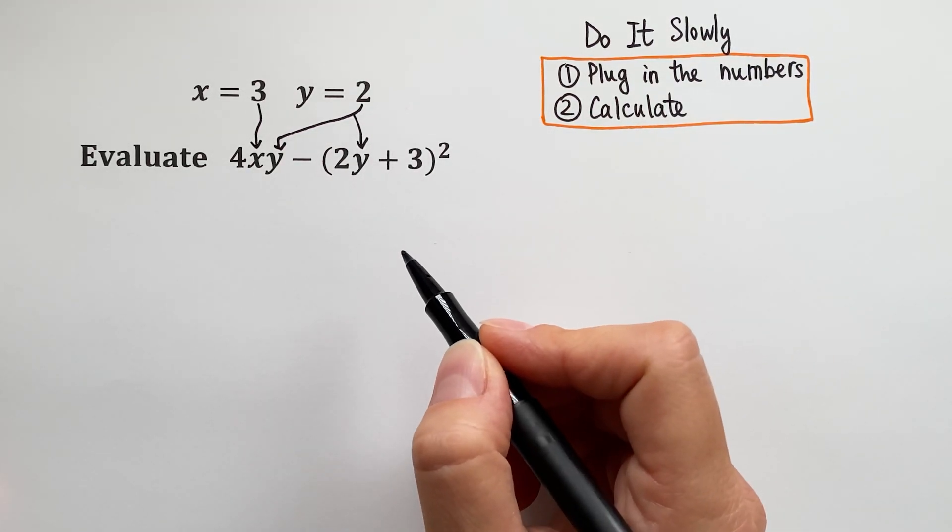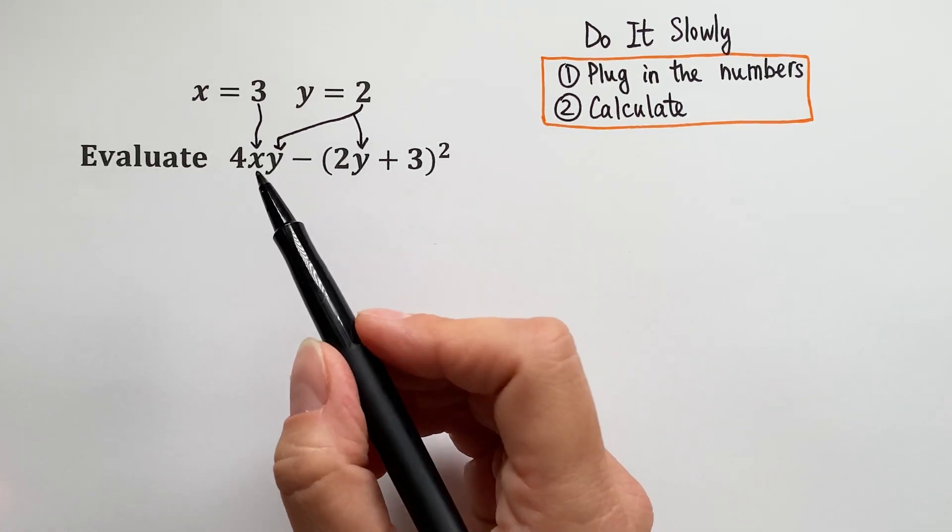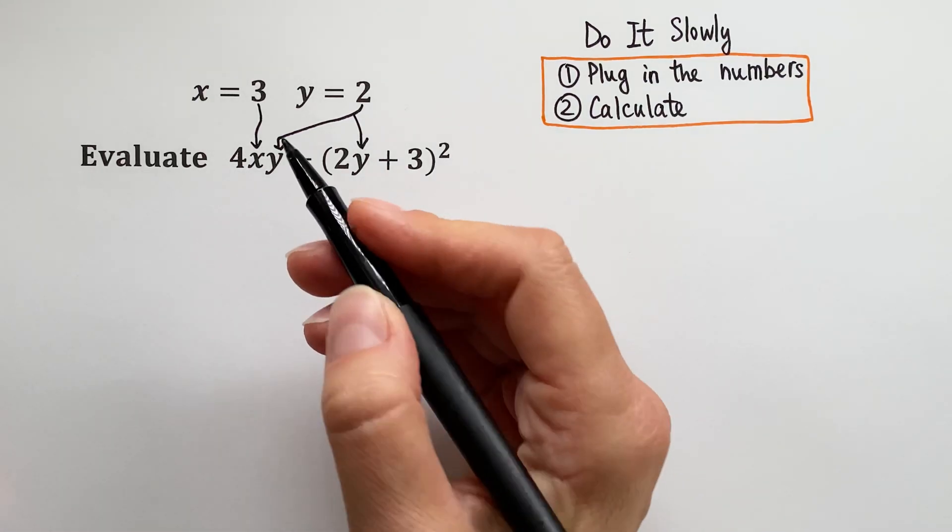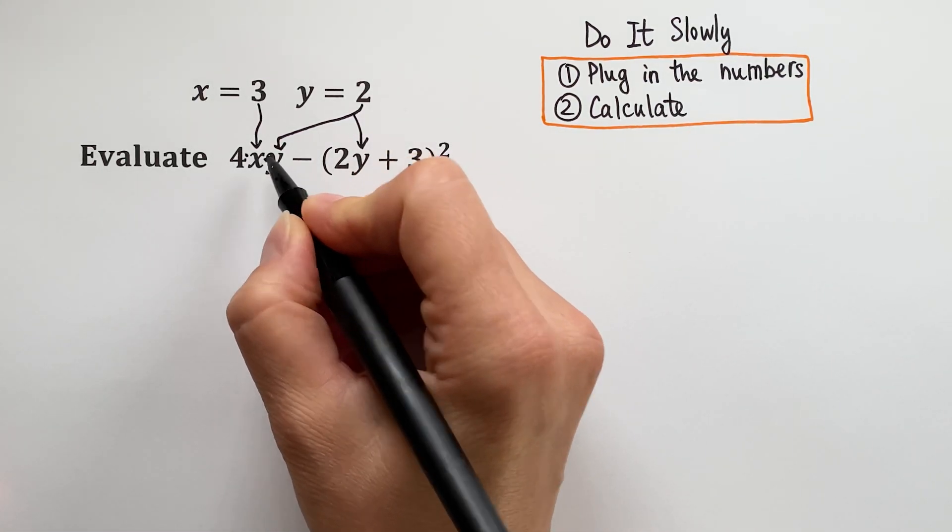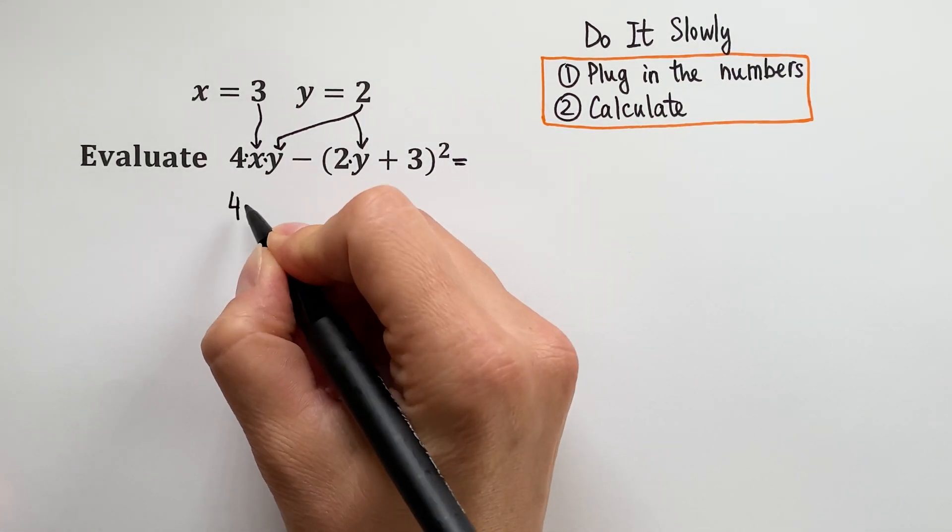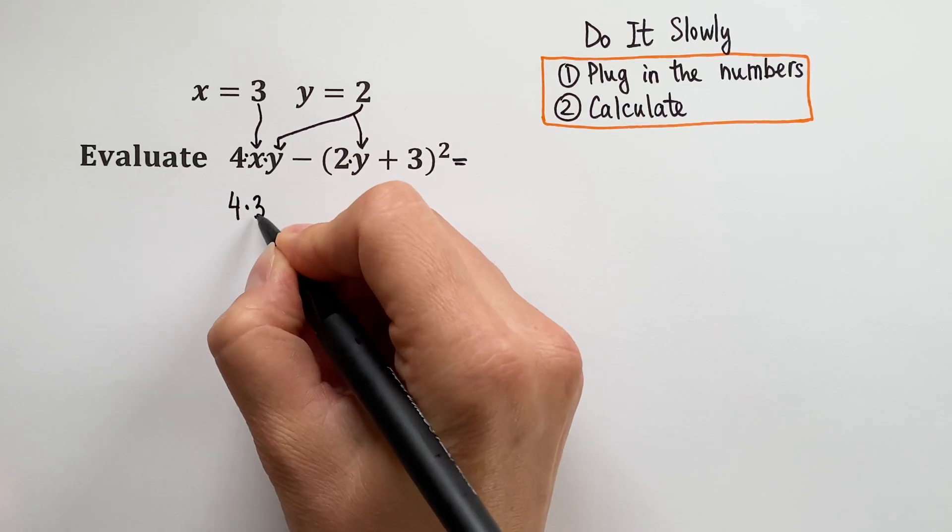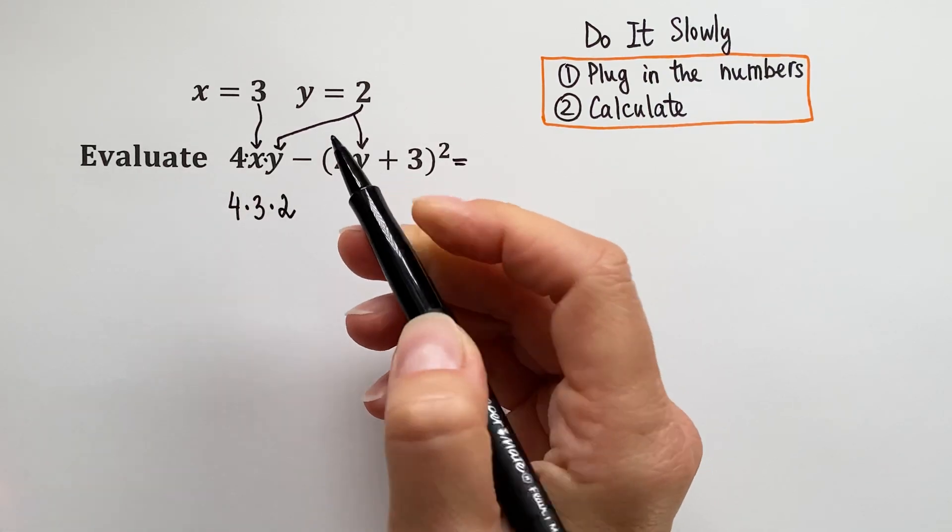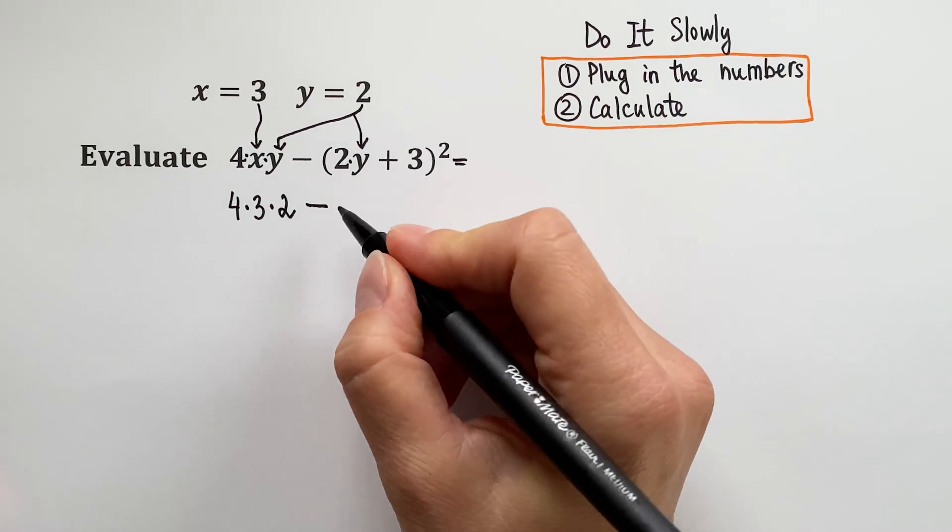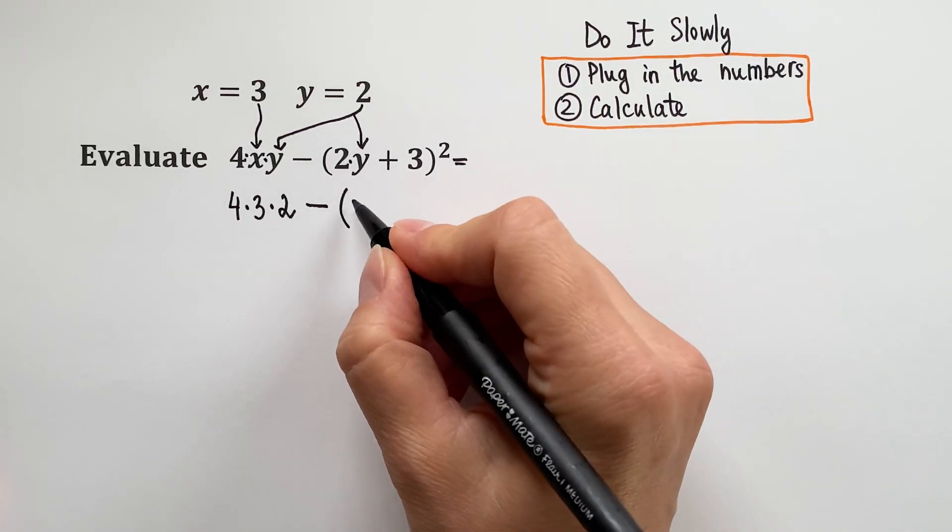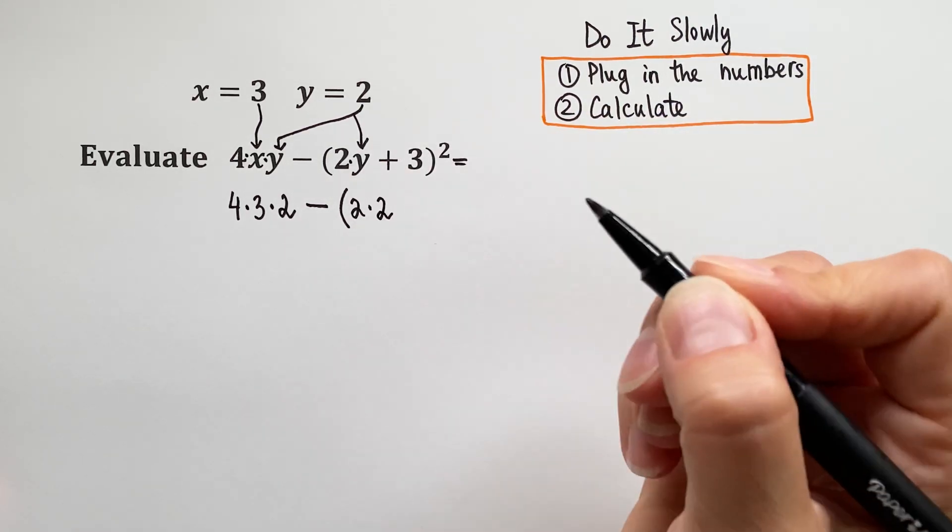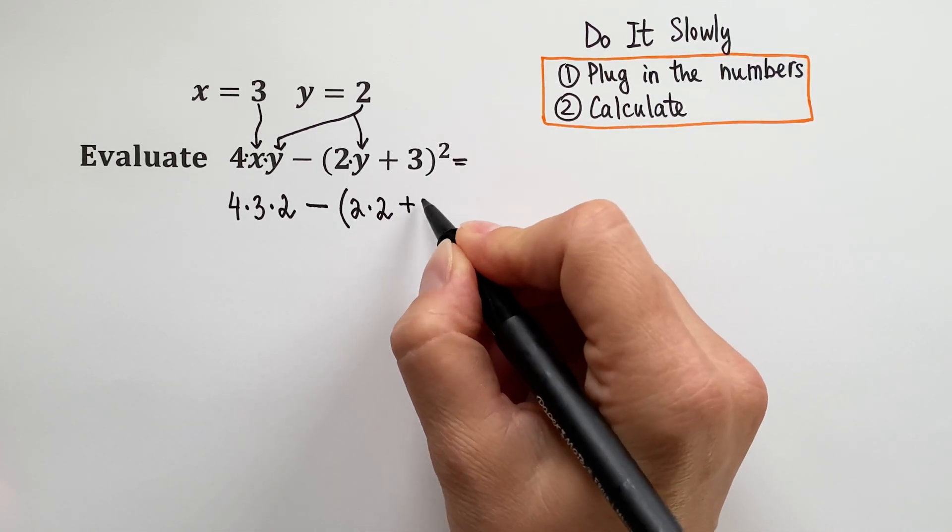And then we are going to calculate. When you see numbers and variables are so close together, it means there is multiplication between them. Now let's plug in our numbers: 4 times 3 times 2, so we plugged in 3 for x and 2 for y. Minus, and then inside the parenthesis we have 2 times our y which is 2, so put 2 where y is, and then plus 3.